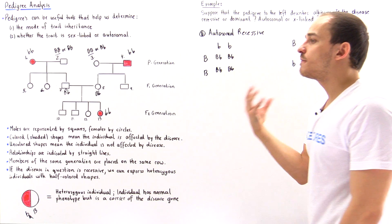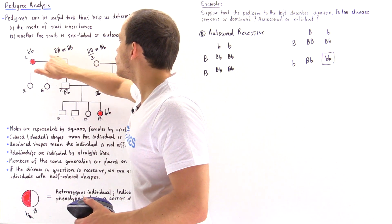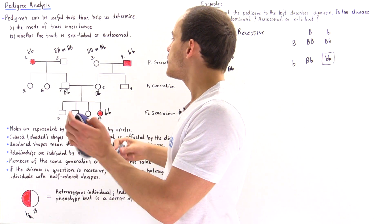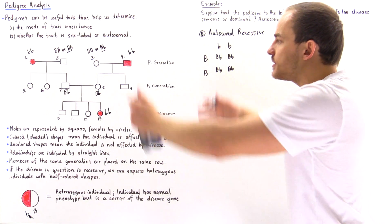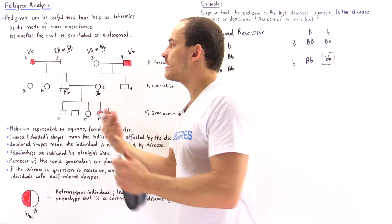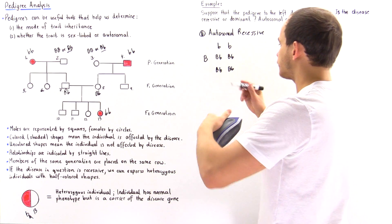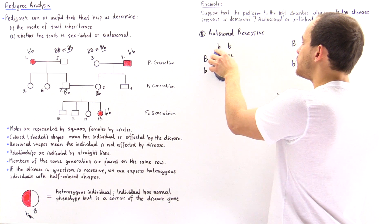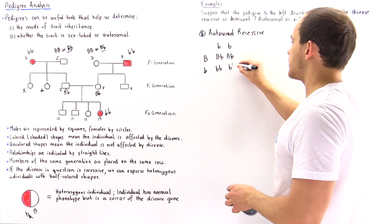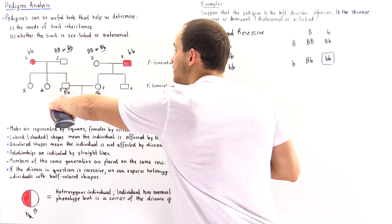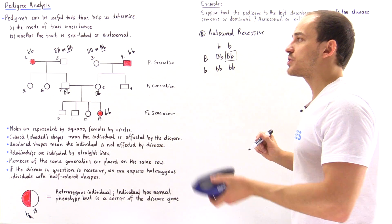We can conclude that assuming albinism is autosomal recessive is consistent with the pedigree provided. We can also test the alternative possibility — that the unaffected grandparents are Bb instead of BB. Carrying out that Punnett square also produces results consistent with the pedigree, since offspring can still be Bb or bb as required.